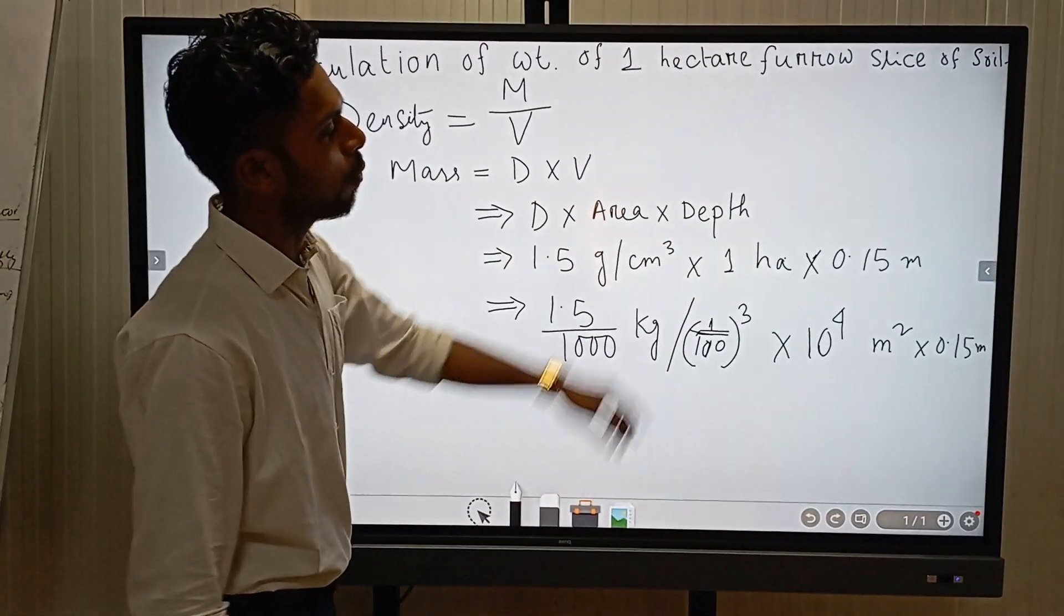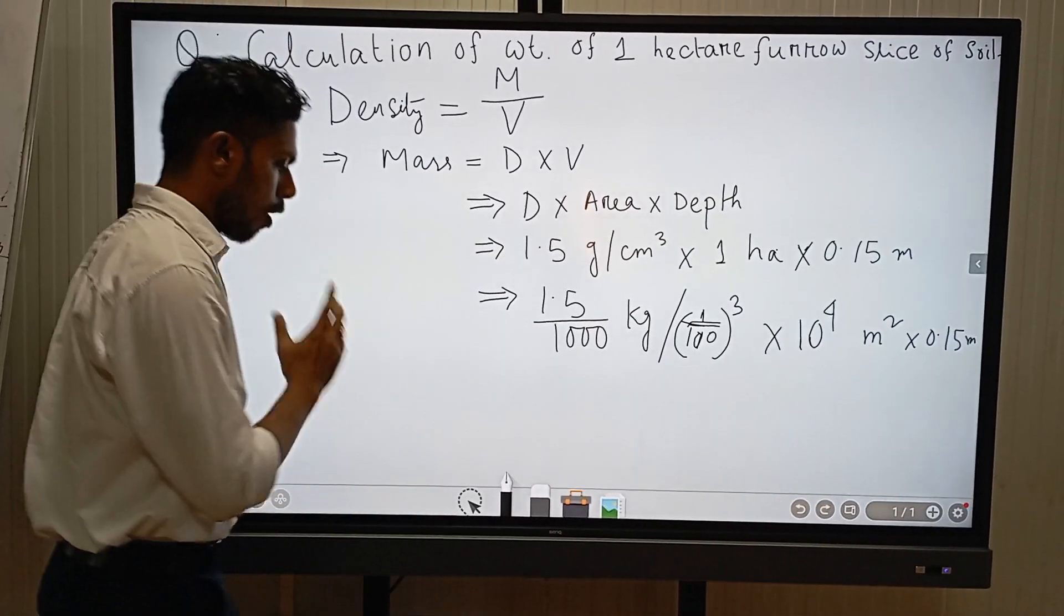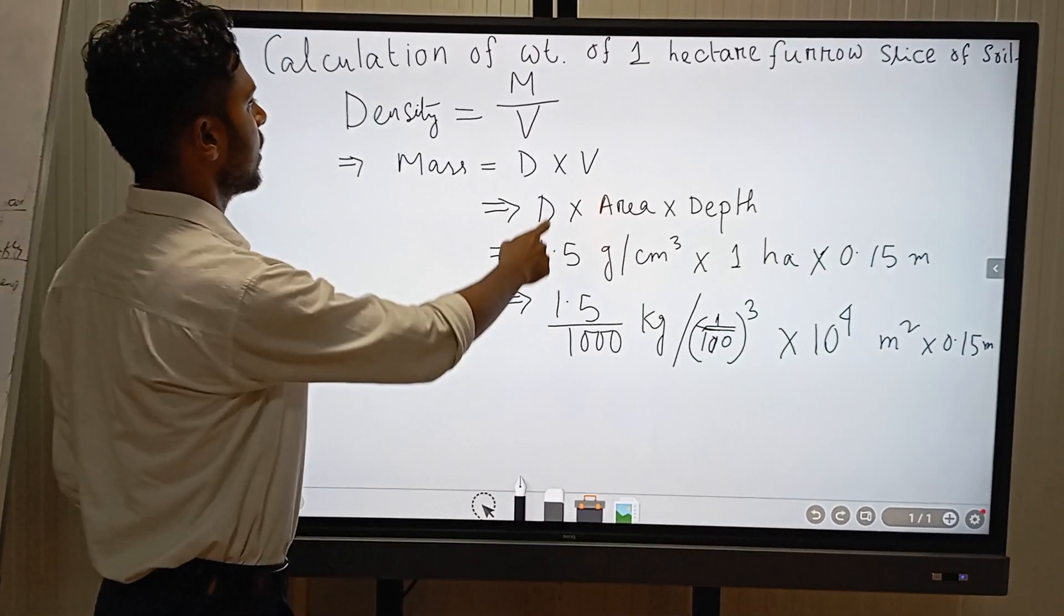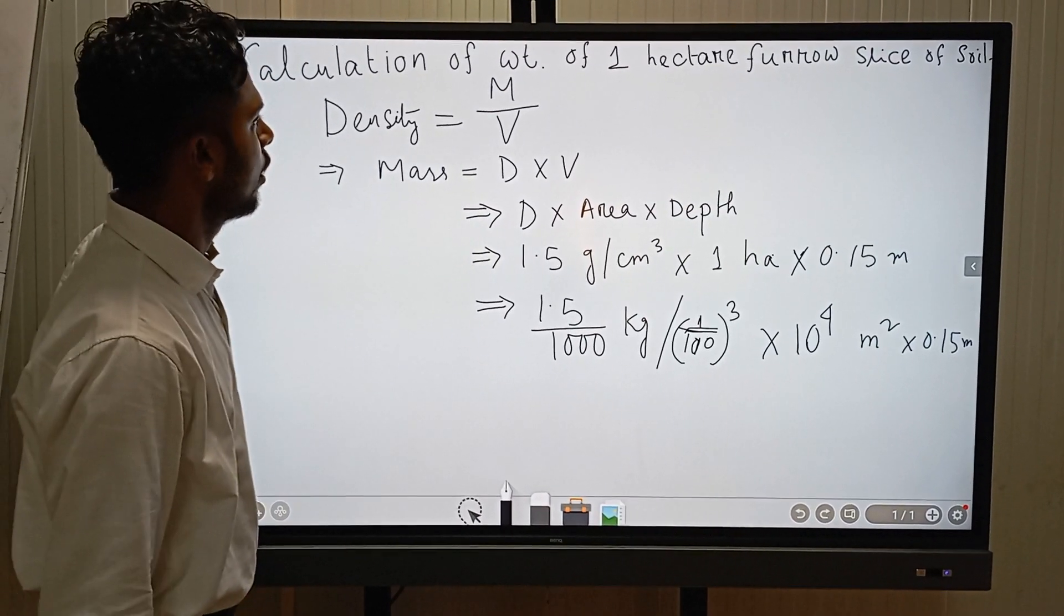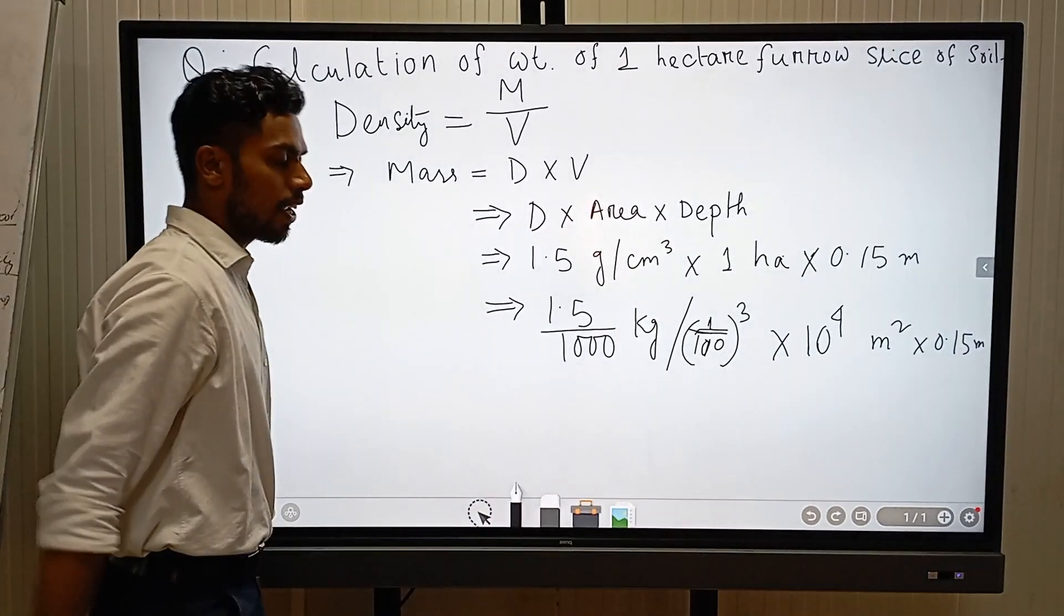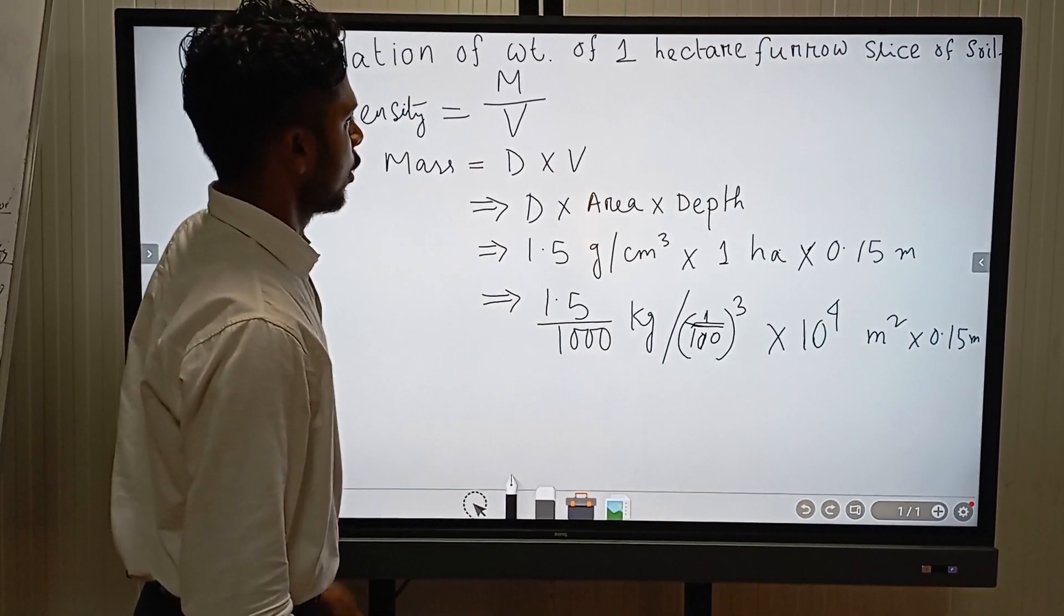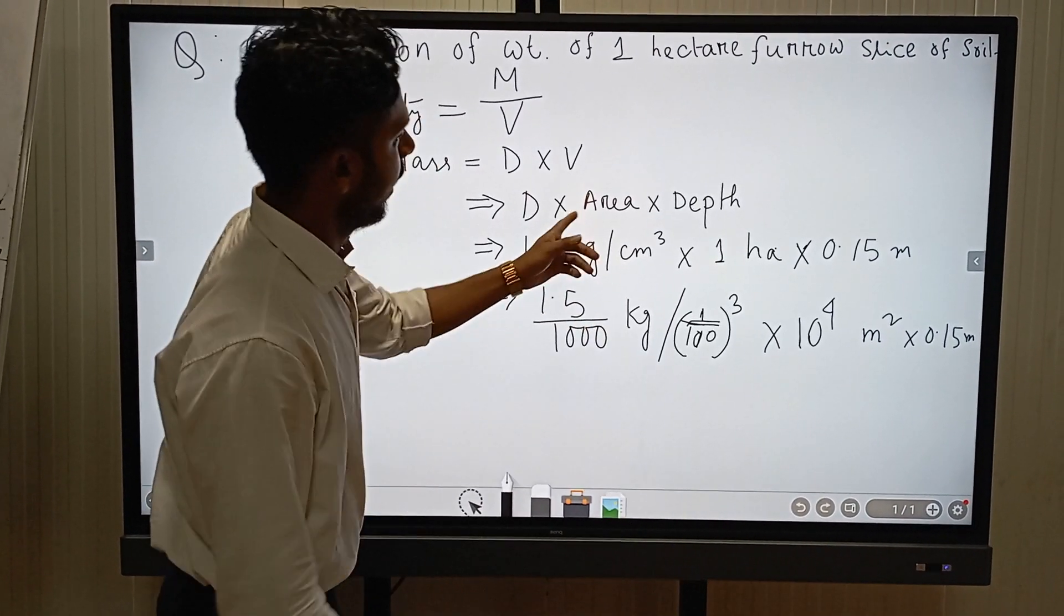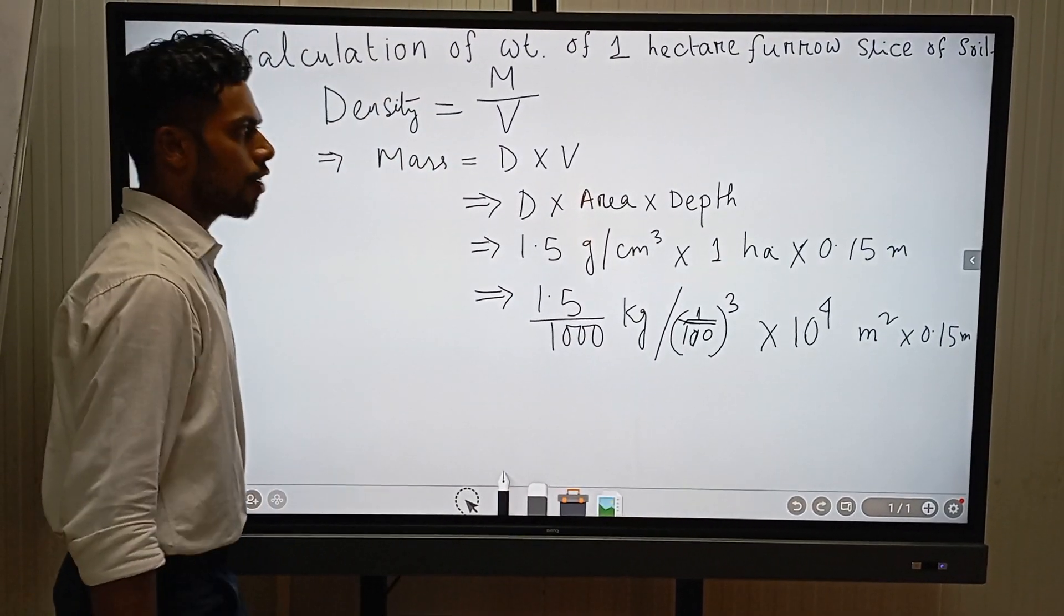Depth is 0.15 meter. From Indian soil, it is evident that bulk density is considered for measuring the mass or weight of one hectare of soil. So D for density - Indian soil has the density of 1.5 gram per cc. So here, D equals 1.5 g/cc, area is 1 hectare as we know, and depth is 0.15 meter.